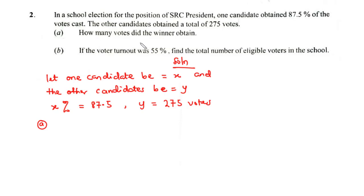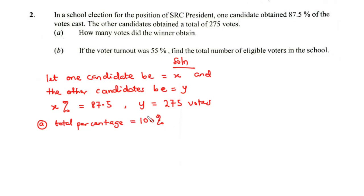For Part A, we are supposed to find the number of votes the winner obtained. Looking at this question, the one candidate obtained 87.5%, which is the greatest percentage in the election, so obviously he was the winner. We know that the total percentage is equal to 100%, which is the same as the percentage obtained by X plus the percentage obtained by Y, so: 100% = X% + Y%.